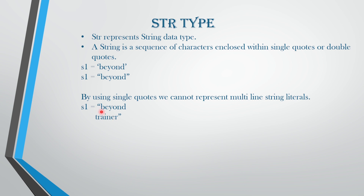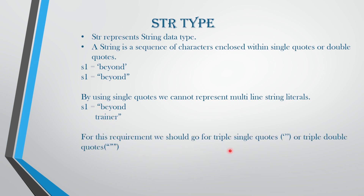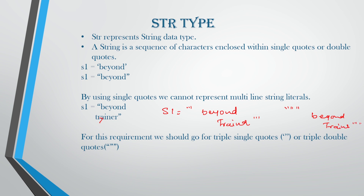By using a single quote we cannot represent multi-line string literals, so for that requirement we should use triple quotes. By using a single quote we cannot represent multi-line literals — you can either use double quotes or triple quotes. For example, using triple quotes: s1 equals triple-quoted 'beyond' on one line and 'trainer' on the next line, then close the triple quotes. You can also use double triple quotes similarly.